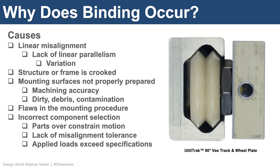Another reason is that mounting surfaces might not be properly prepared, due to machining accuracy or dirt, debris, or contamination on the surfaces where the linear guides were mounted. There can also be flaws in the mounting procedure — essentially the way they are aligned to each other, and even the order in which the screws are tightened can affect binding. There could also be incorrect component selection, and sometimes applied loads will exceed the specifications, resulting in stick-slip or having the linear guide not move at all.